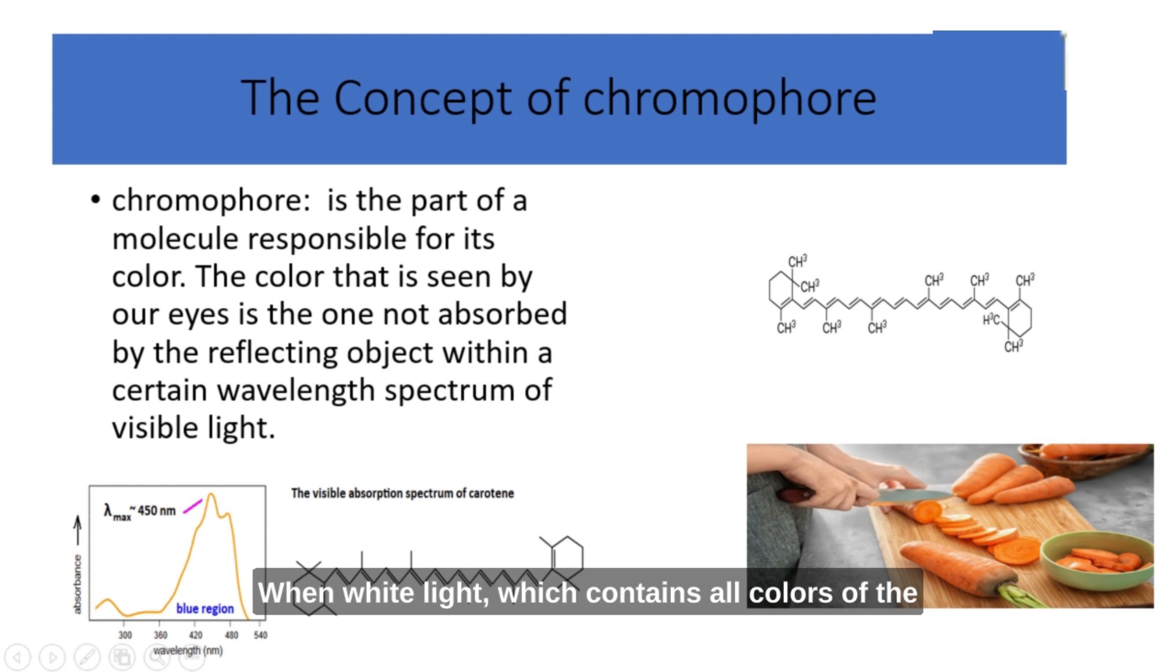When white light, which contains all colors of the visible spectrum, shines on beta-carotene, the conjugated system absorbs specific colors of light, particularly in the blue and green regions of the spectrum. As a result, beta-carotene reflects or transmits light corresponding to the red and orange colors, giving it its characteristic vibrant orange color.